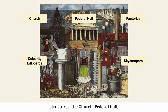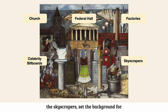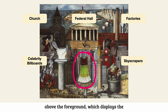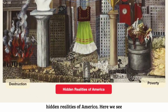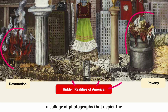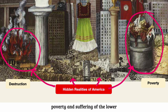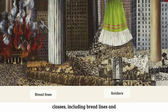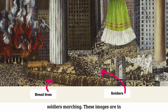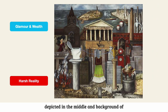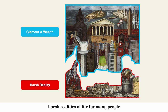These indomitable structures — the church, Federal Hall, the factories, celebrity billboards, and the skyscrapers — set the background for the lone fragile Mexican dress hanging above the foreground, which displays the hidden realities of America. Here, we see a collage of photographs that depict the poverty and suffering of the lower classes, including bread lines and soldiers marching. These images are in sharp contrast to the glamour and wealth depicted in the middle and background of the painting, and serve to highlight the harsh realities of life for many people in the United States during the Depression era.